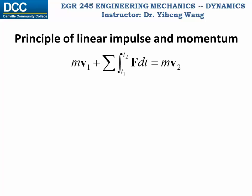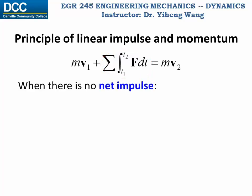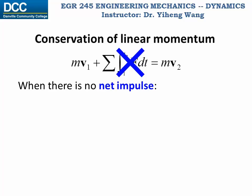We already learned the principle of linear impulse and momentum. Linear impulse is defined as the sum of the total forces acting on a particle, integrated from initial time to final time. Therefore, if there is no net impulse, this term can be eliminated, and the principle becomes the conservation of linear momentum, which states that the initial linear momentum of the particle equals the final linear momentum.